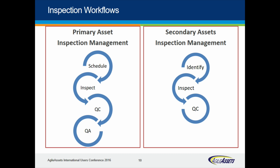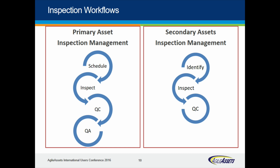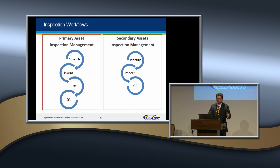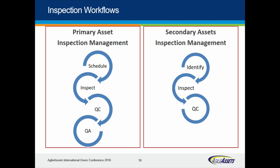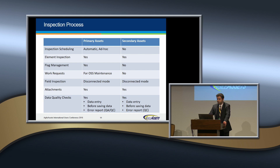In inspection management, we have scheduling, inspection, and QC and QA process for primary assets, but we don't need scheduling for secondary assets — only one level of review, which is QC. For each level of process — inspect, QC, or QA — we have different business rules for each asset and each structure, and these can be defined by the user or configured by the system at a structure level.